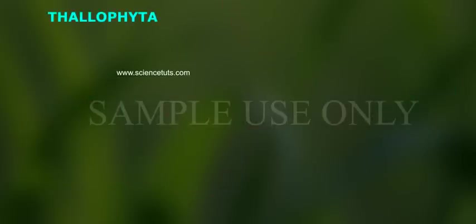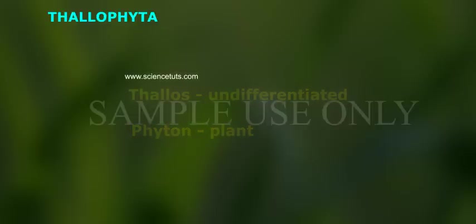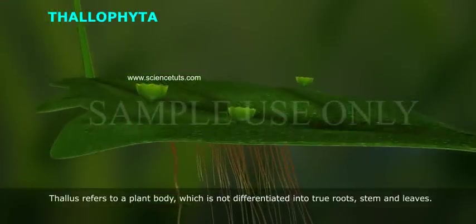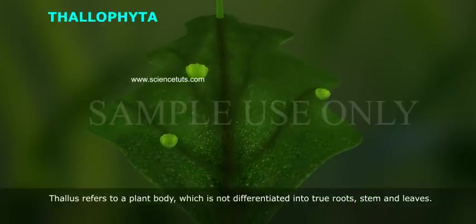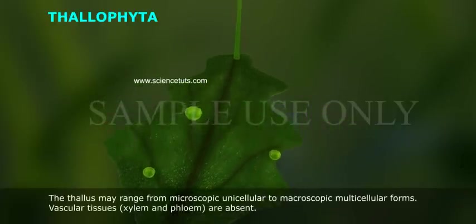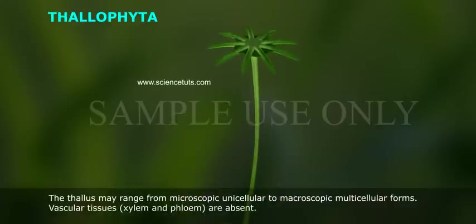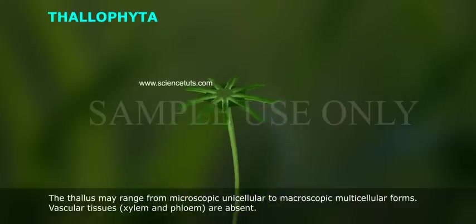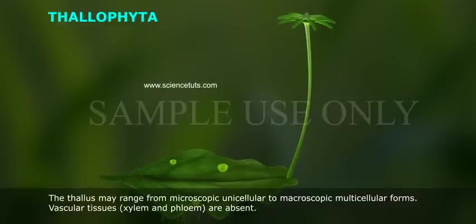Thallophyta — 'Thallus' means undifferentiated, 'phyton' means plant. Thallus refers to a plant body which is not differentiated into true roots, stem, and leaves. The thallus may range from microscopic unicellular to macroscopic multicellular forms. Vascular tissues, xylem and phloem, are absent.